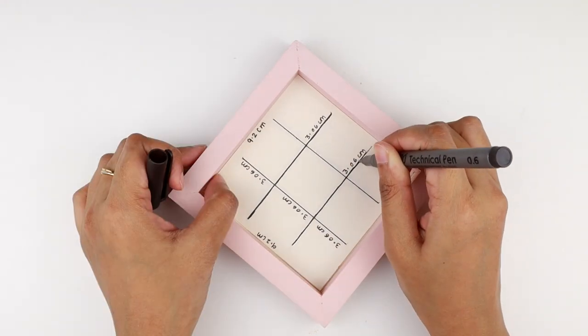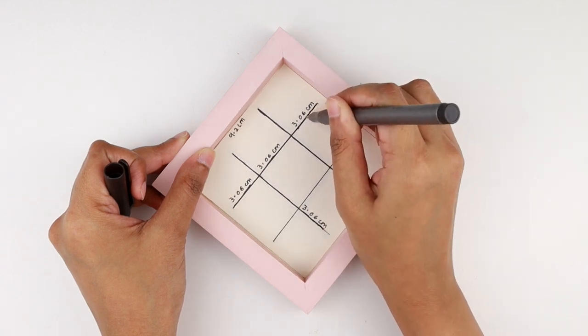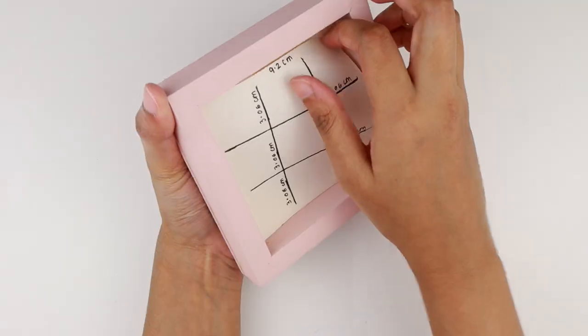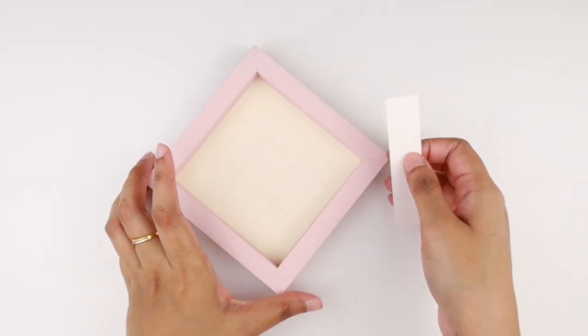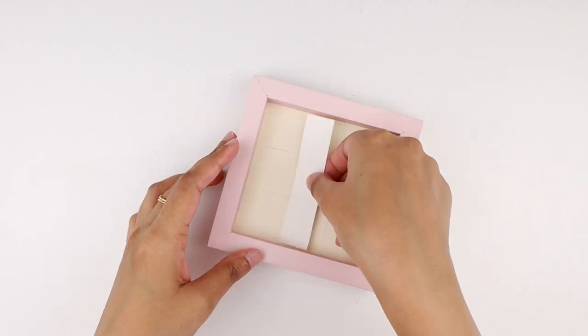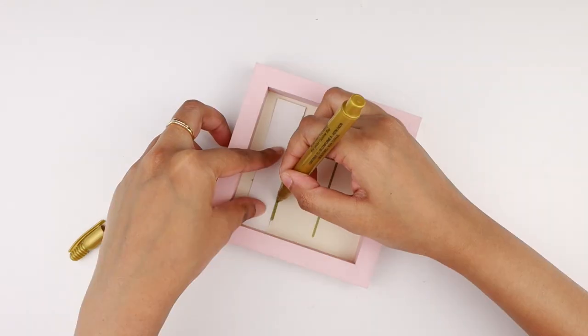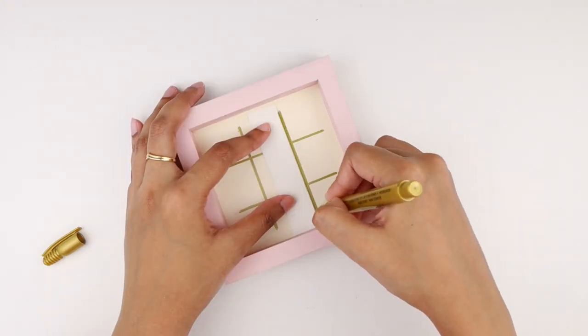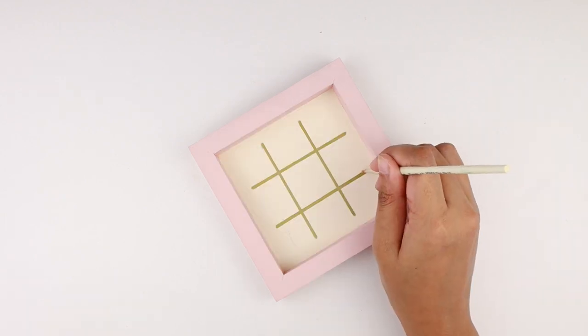I cut out a small rectangular piece of cardstock that I was going to use as a ruler. I used a gold marker pen to draw the grid following the markings. Then I made lines a little more thick to make the grid stand out better. You can use the same off-white paint to correct any mistakes.